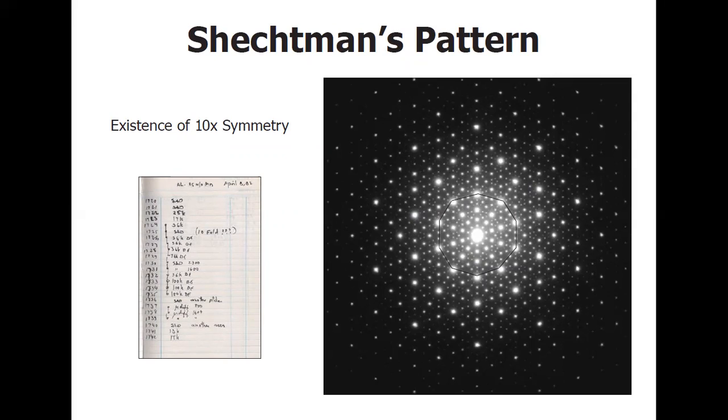So theoretically, it should mean a ten-fold symmetry. A forbidden symmetry should exist. At first, even Shechtman did not believe what he saw. And famously, he noted this result into his log as tenfold followed by three exclamation marks.